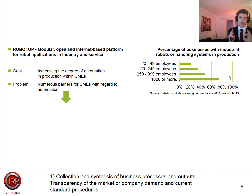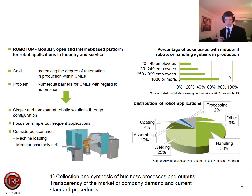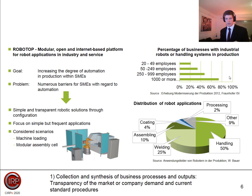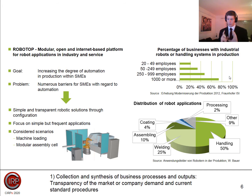SMEs have less automation, so there is a huge potential — a huge economical potential — but also some challenges. Because they are not informed, it is very hard to ramp up a project. Therefore, it is necessary to make it easy, to make it standardized, and to use business cases that occur frequently. We analyzed the market and focused on handling and assembling, because there are good use cases — especially machine loading and a modular assembly cell for real business cases.